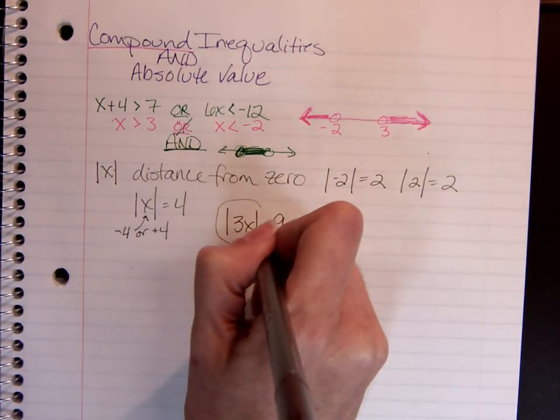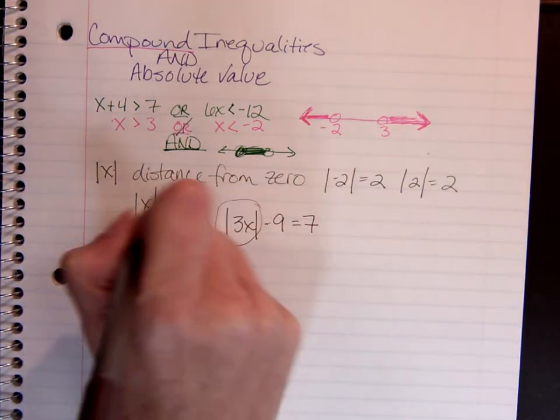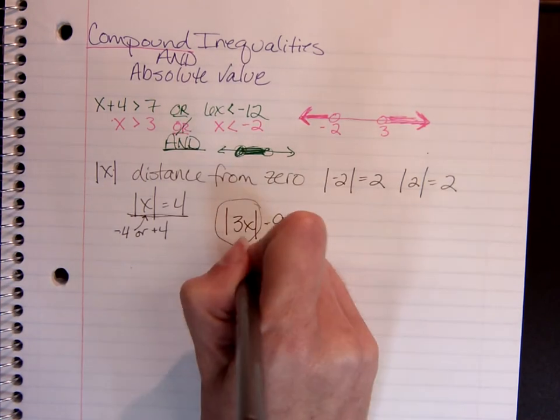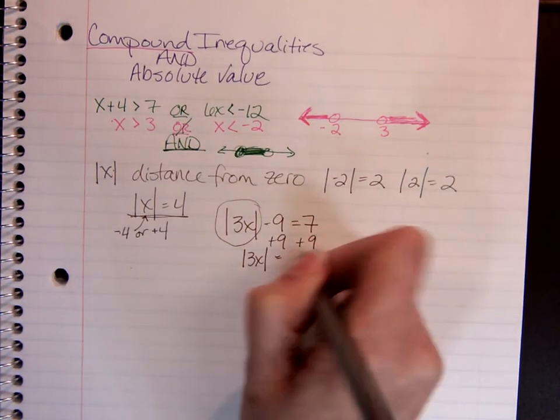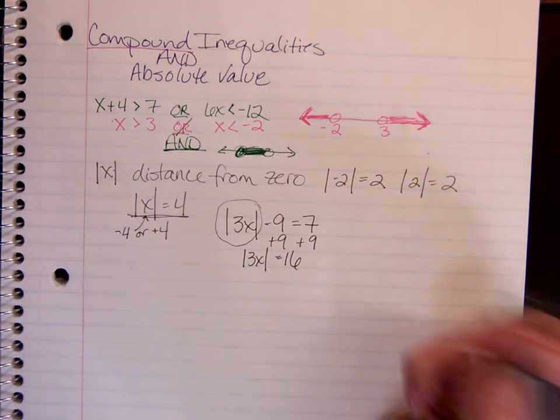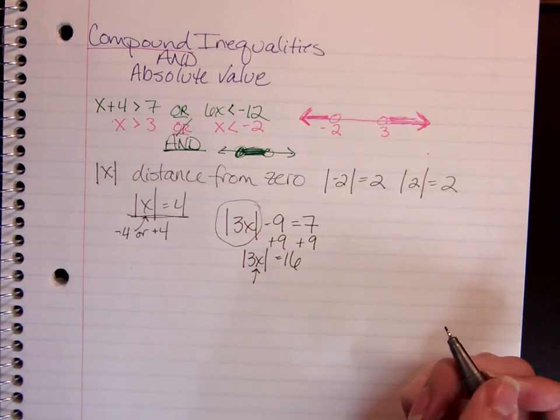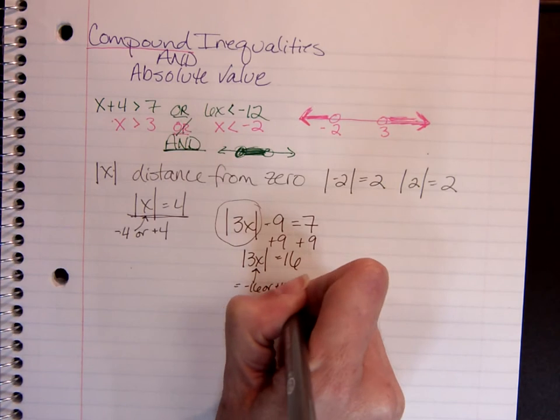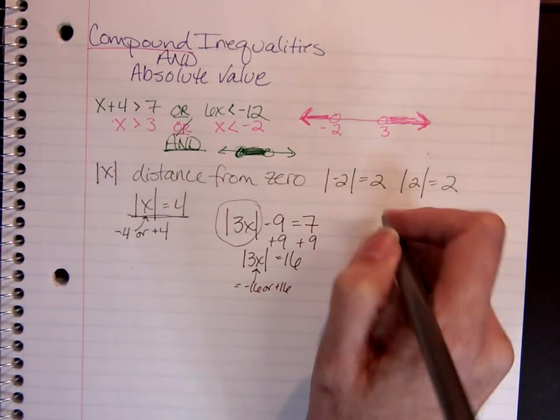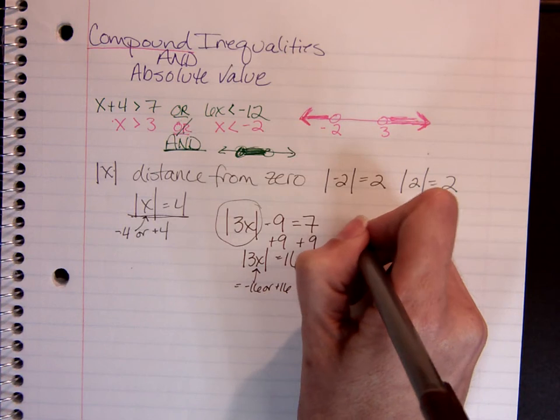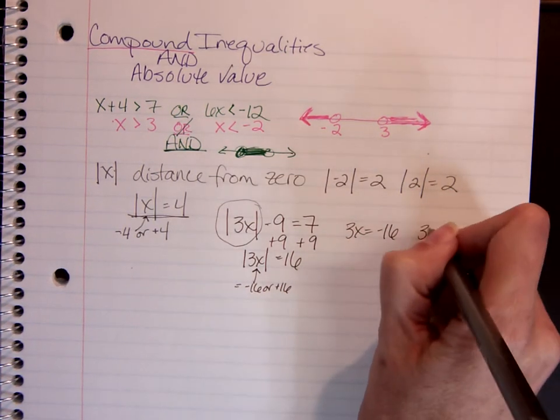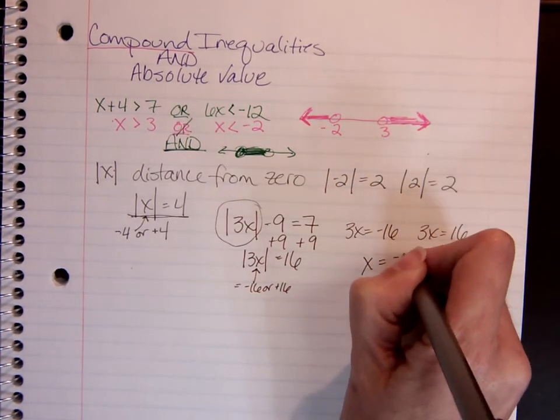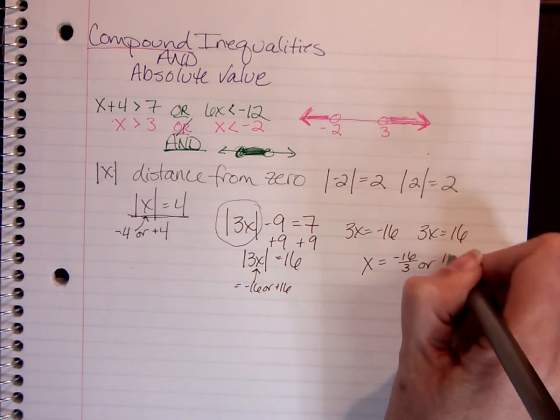absolute value of 3x minus 9 equals 7. First, I have to isolate the absolute value. Get that by itself so that I have something similar to what we just looked at. So if I add 9 to both sides, I end up with the absolute value of 3x equals 16. So that means whatever I plug in here and multiply it by 3, it's going to equal either negative 16 or positive 16, and they're both going to be okay. So we just break this into two equations. 3x equals negative 16 and 3x equals positive 16.